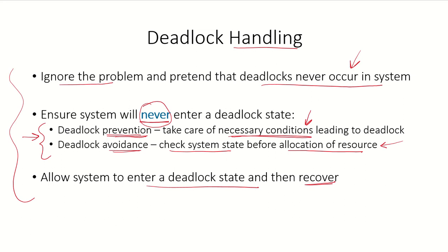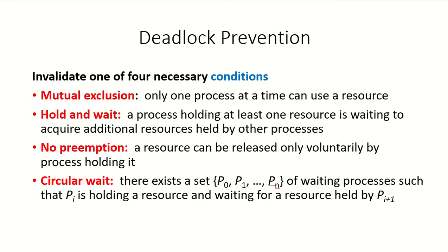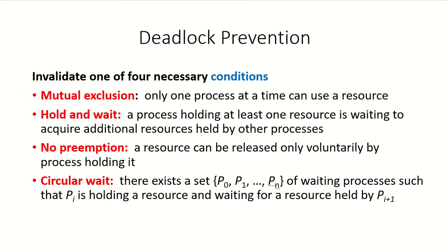In this video we will discuss deadlock prevention. The four necessary conditions of deadlock are mutual exclusion, hold and wait, no preemption, and circular wait. When all four conditions exist in the system, a deadlock has occurred. To prevent a deadlock, if any one of these four conditions is invalidated, the deadlock can be prevented.